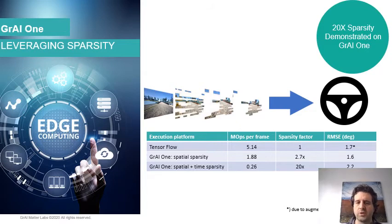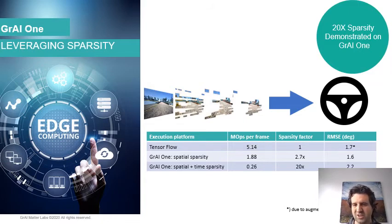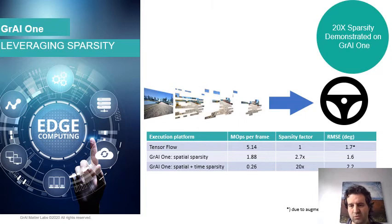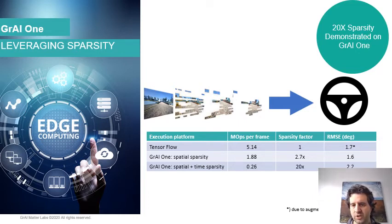Then we have the experiment where we actually try to do spatial and time sparsity in Gray One. And there we really go to rock bottom with the amount of operations for the same stream running. This was at a very modest frame rate — I think it was at 10 frames per second — which means the difference would actually increase if we go to higher frame rates. We actually have only 260k operations per frame, meaning a reduction of 20 times in the amount of computations.